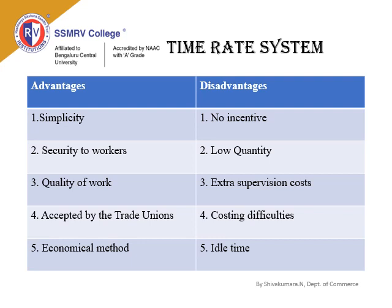Third, quality of work — as already mentioned in the suitability, this system gives more importance to quality rather than quantity. Fourth, accepted by trade unions — this system provides a guaranteed minimum wage to almost all employees, which is why trade unions accept it. Fifth, economical method — it benefits both employer and employee: the employer gets quality products because workers are not pressured to focus only on quantity.